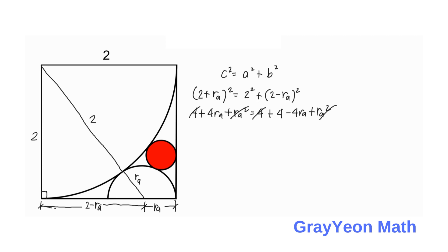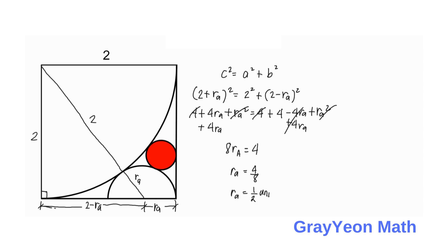After cancellation we add the 4·R_A terms: 4·R_A plus 4·R_A gives 8·R_A equals 4, so R sub A equals 4 over 8, which simplifies to R sub A equals 1/2 units.